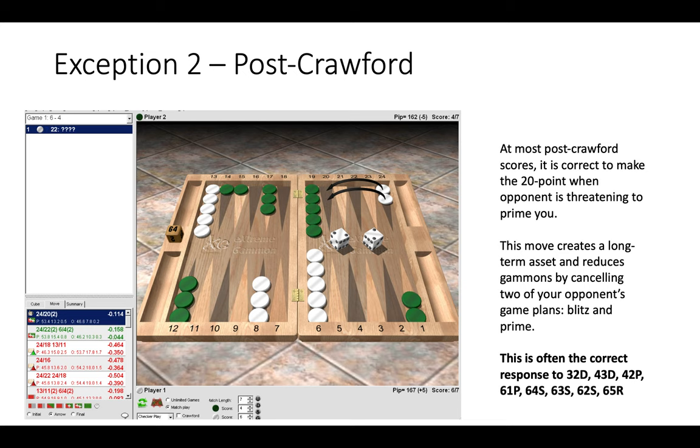So at most post-Crawford scores, it is correct to make the 20 point if there is a threat of being primed. So as we saw before, if your opponent brings two checkers down from the mid, he is threatening a prime structure and here we do not want that to happen. By making the 20 point, it cancels out two of our opponent's game plans. He can no longer blitz us and he can no longer prime us.